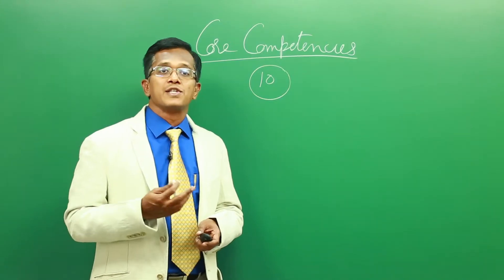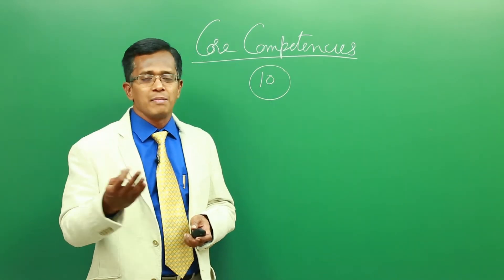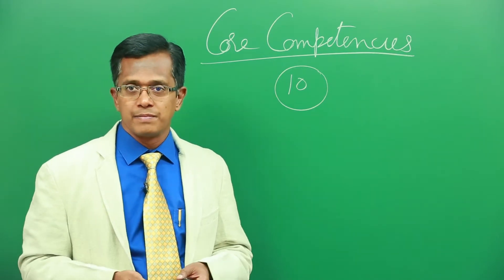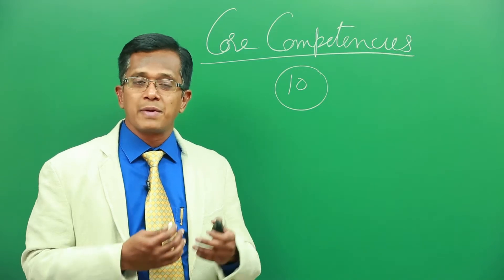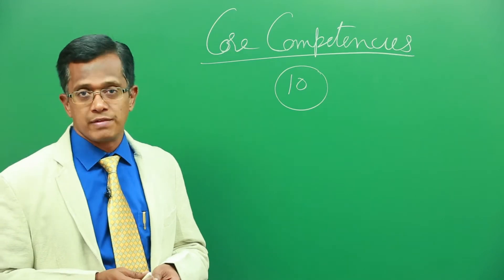When I say interpretation of lab data, for example pancreatitis, immediately you see the amylase levels are high. Gout, uric acid levels are high. HbA1c levels more than seven. So interpreting the lab data is another core competency which a pharmacist should develop.